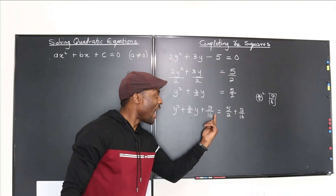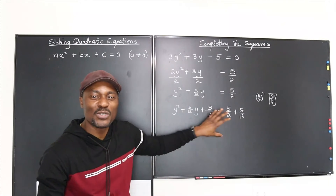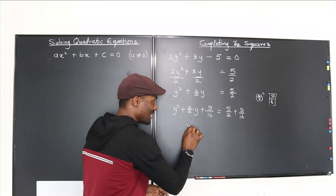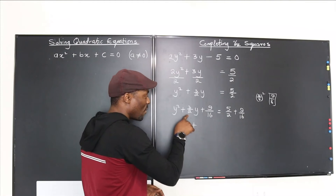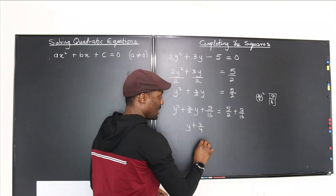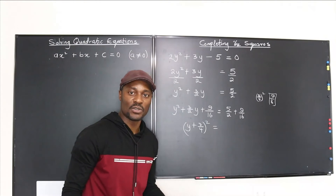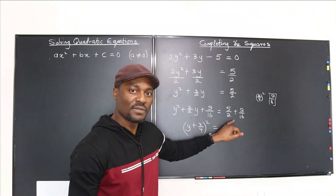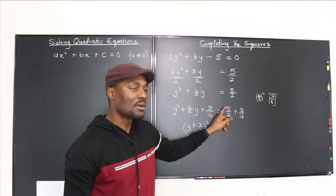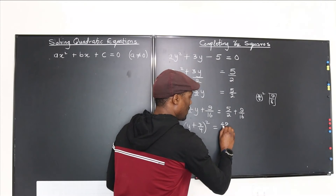Once you add that result, don't worry about simplifying the left side — just write it as the variable plus what you squared, which was 3 over 4, all squared. On the right side, find a common denominator: 5 over 2 times 8 over 8 gives 40 over 16, plus 9 over 16 equals 49 over 16.